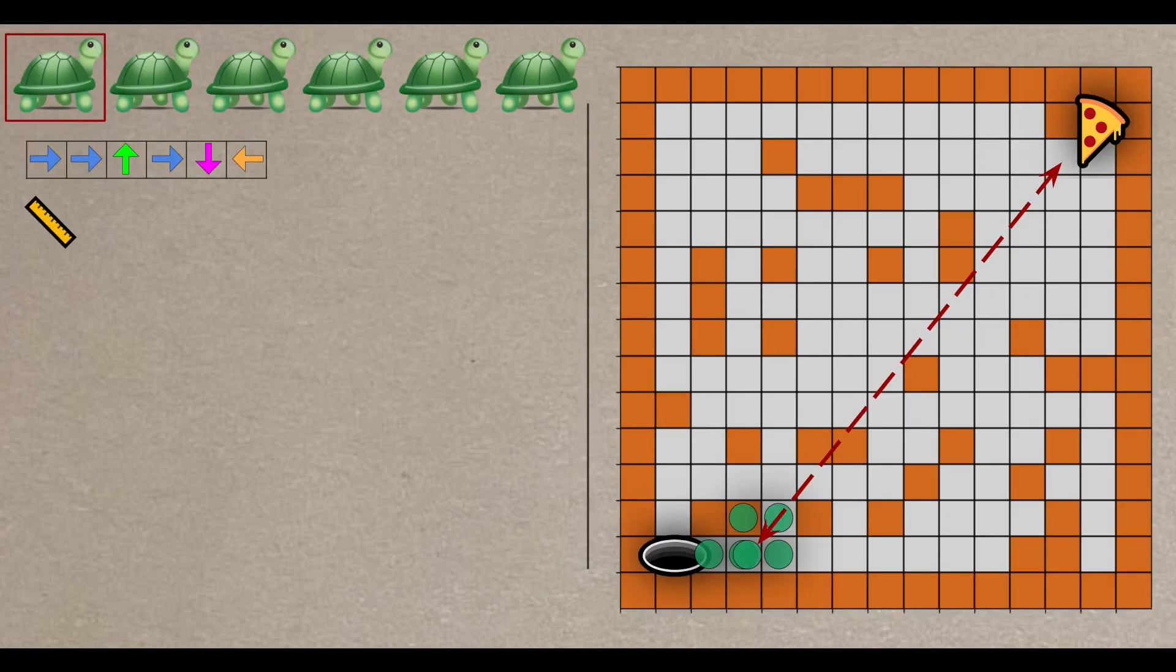The primary factor that we aim to minimize is the distance between the turtle's final position and the pizza. We will use Manhattan distance metric here, since our maze is grid-based. Manhattan distance is calculated by summing the difference in the x and the y-coordinates.